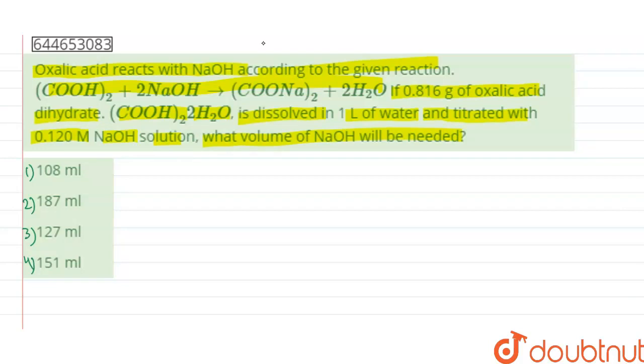So here, basically, neutralization of oxalic acid takes place, which means on complete neutralization, equivalents of oxalic acid will be equal to equivalents of NaOH.